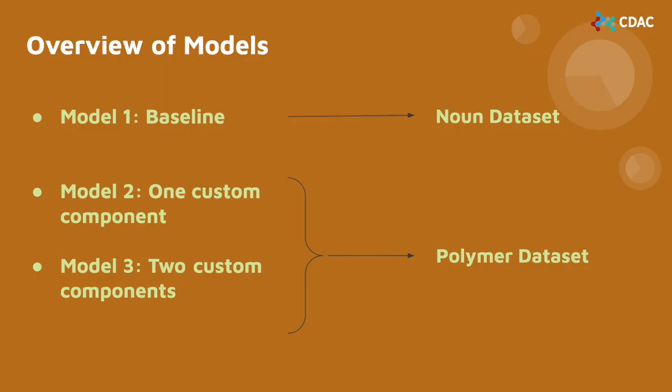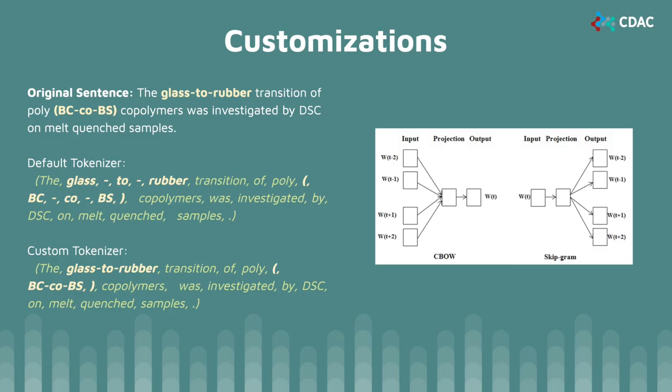The next slide focuses on how we customized our models. In total, we had three models. The first model with the noun dataset had no customizations. The second model used the polymer dataset with one customization. The third model used the polymer dataset with two customizations. The first way we customized our polymer dataset model was through tokenization. Tokenization is useful as it splits words or phrases into tokens, which allows the NLP model to better understand semantic relationships between words.